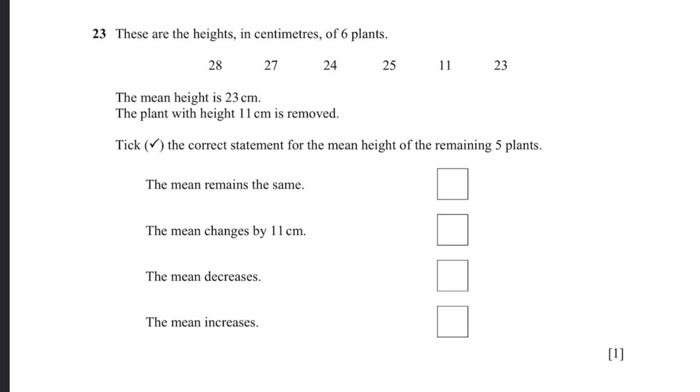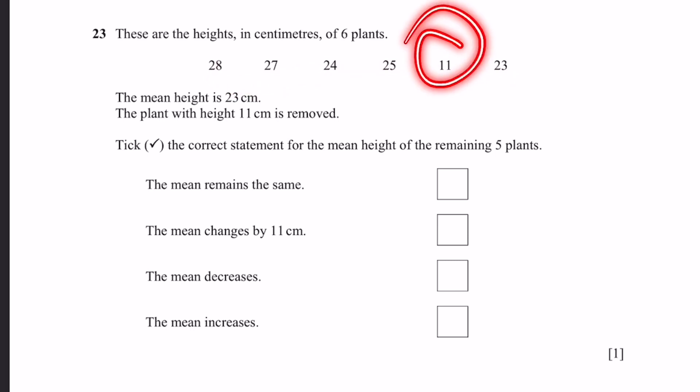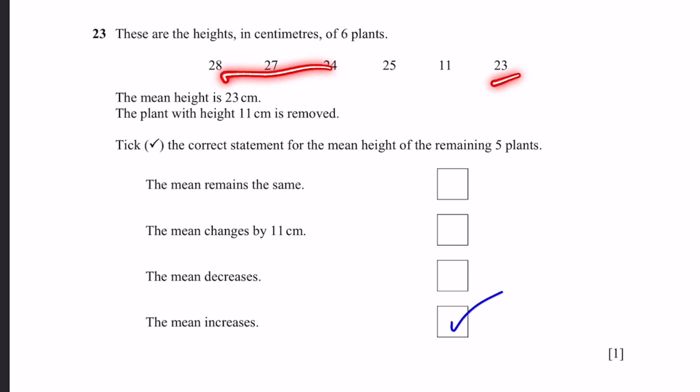Question 23. The mean height of 6 plants is 23 cm. The plant with height 11 cm is removed. What happens to the mean of the remaining 5 plants? Because we remove the lowest value — the one most different from the others — the mean will increase, since there is now a greater proportion of higher values.